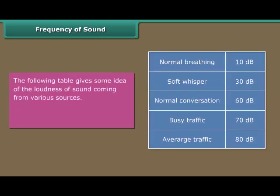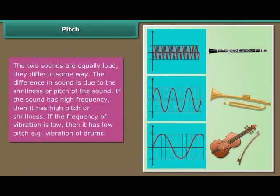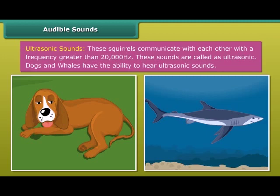A table gives some idea of the loudness of sound from various sources. Above 80 dB, noise becomes physically painful. Two sounds can be equally loud but differ in shrillness or pitch. If the sound has high frequency, it has high pitch or shrillness. If the frequency of vibration is low, it has low pitch — for example, the vibration of drums.